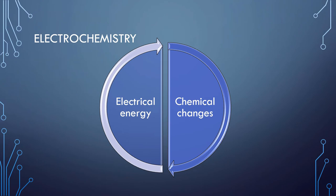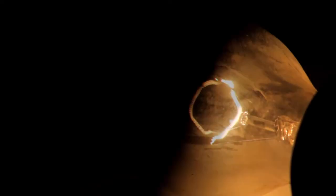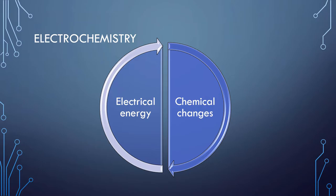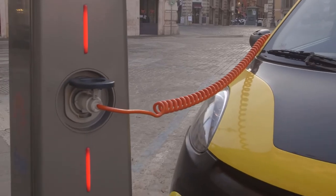So what is electrochemistry? Electrochemistry is the branch of chemistry which deals with the study of the interconversion of electrical energy and chemical energy. Electrochemistry is when chemical energy is transformed into electrical energy, which is then often transformed into another kind of energy such as light or heat electricity.